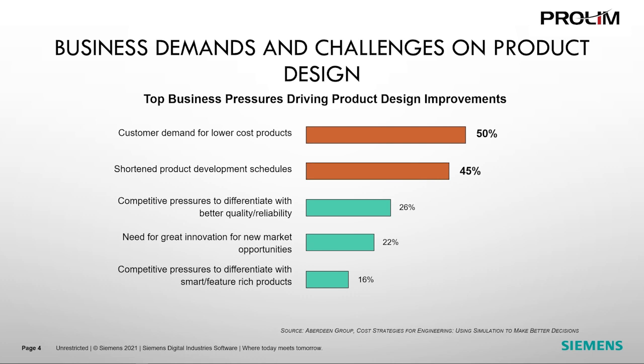The top pressure is reducing the cost of the product — it is currently the most important factor driving improvements in product design. Much of the final cost of a product is determined by the decisions an engineer makes during the design phase. At number two is the need to get products to market as quickly as possible, meaning engineers must find ways to take cost out of products without adding significant time to the overall development process.